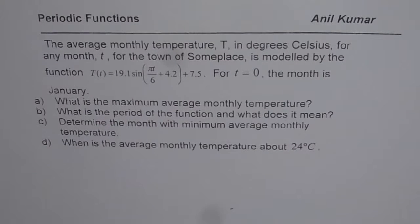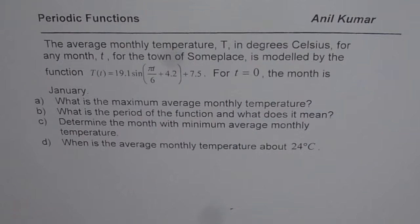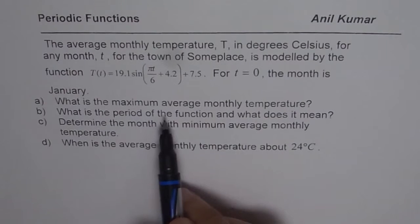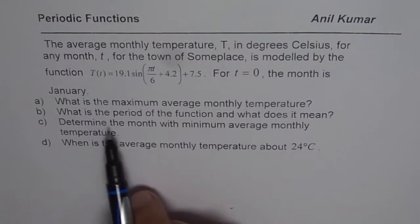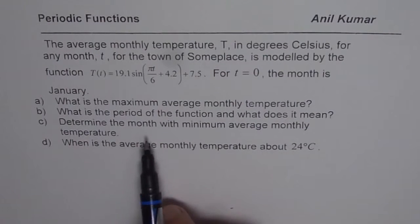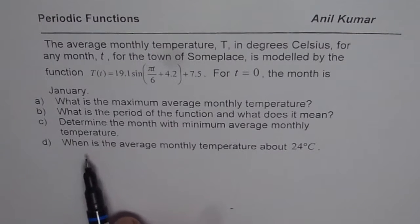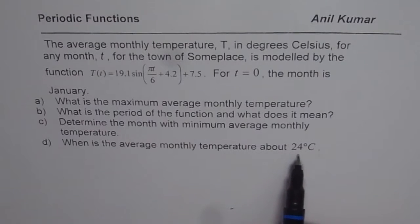I am Anil Kumar, and in this video we will learn a technique of answering periodic functions related questions in a very simple way. The question here is: the average monthly temperature T in degrees Celsius for any month from the town of some place is modeled by the function T(t) = 19.1 sin(πt/6 + 4.2) + 7.5, where T = 0 is January. We are asked: what is the maximum average monthly temperature, what is the period of the function and what does it mean, determine the month with minimum average monthly temperature, and when is the average monthly temperature above 24°C? You can pause the video, answer the question, and then look at my suggestions.